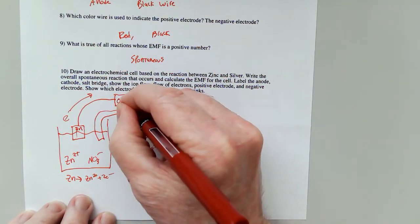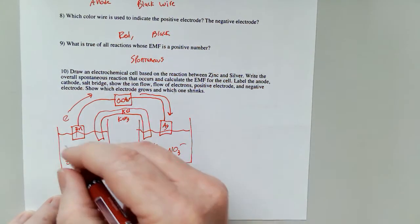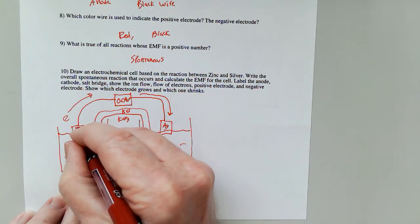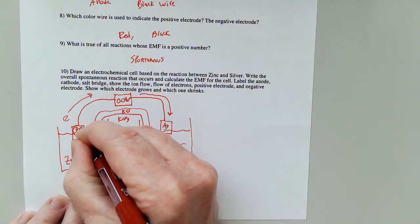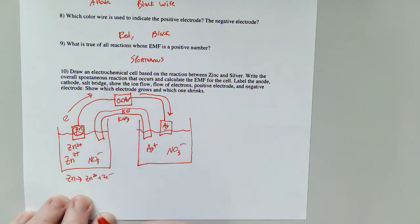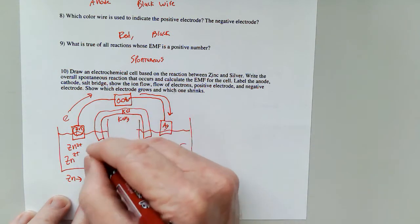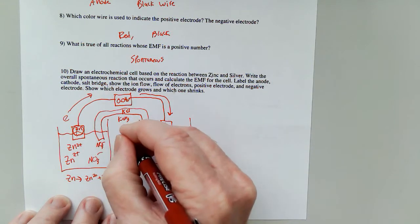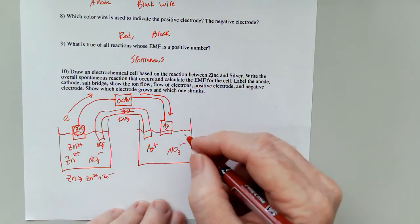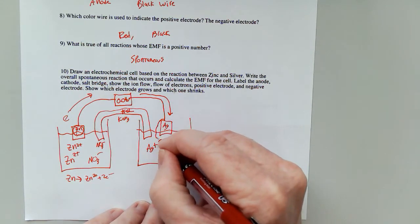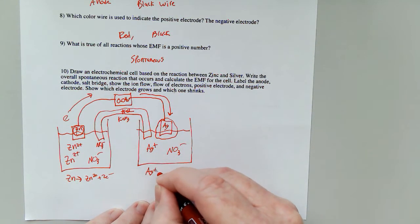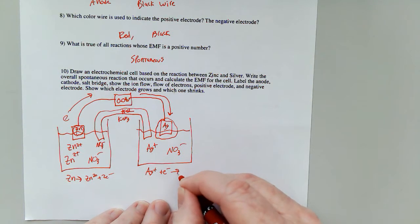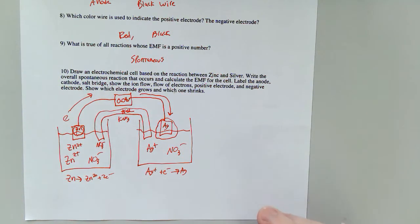This ends up reading 0.04 volts. That means that this electrode is going to get smaller over time and more zinc 2 plus ions will fall into solution, which means that will attract the negative ion here, the nitrate or the chloride. Assuming it's potassium nitrate over here. This one will get bigger because Ag plus plus an electron is forming Ag.